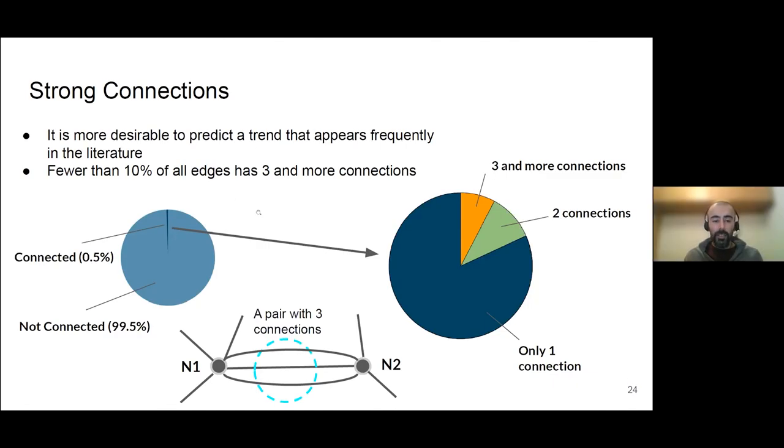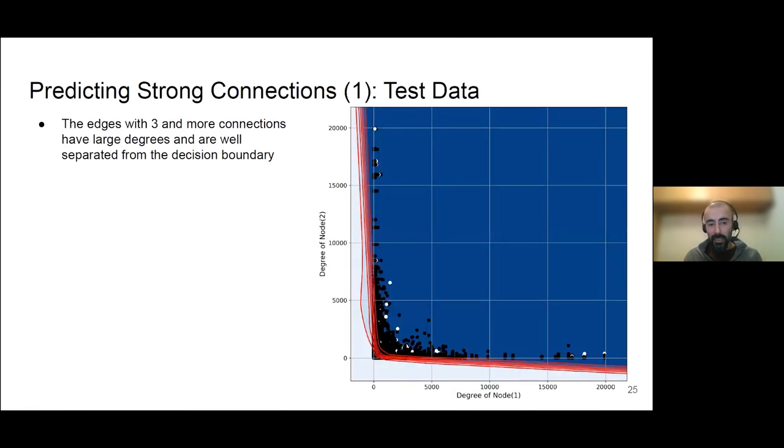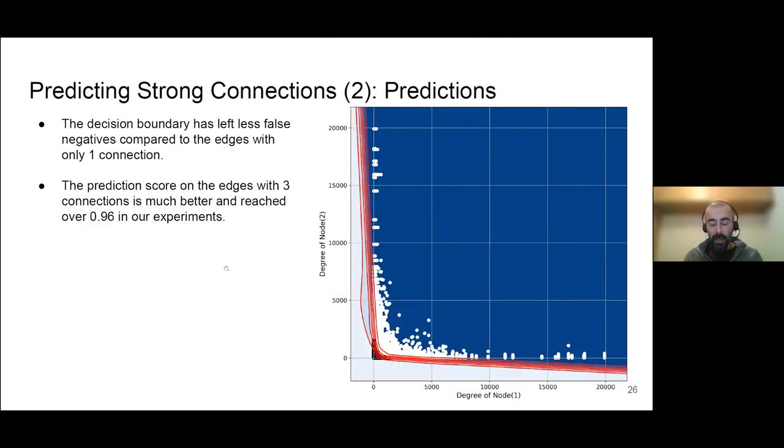So what we've done in this competition was predicting edges that connect and have at least one connection. I tried to predict more strong connections so that trend is appearing in more than one paper, like in three papers. So that's the stronger connection. It's gonna be a more meaningful trend and gonna last more. And surprisingly, when you try to predict strong connection, it gives you a very higher score. So I reached a score of 0.96 to predict connections with three or more connections. Edges with three or more than three connections.